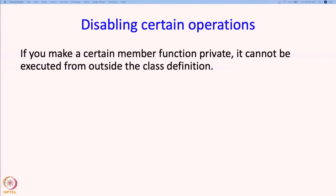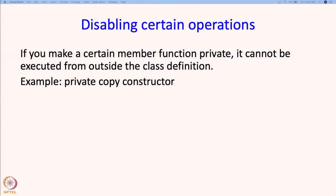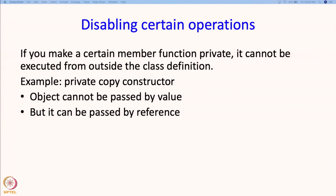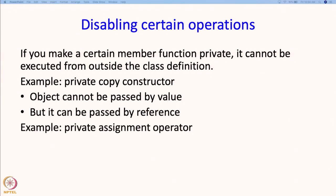This framework of member functions allows you to disable certain operations. If you make certain member functions private, they cannot be called from outside the class. For example, if you make the copy constructor private, it cannot be called from outside, meaning you are telling the designer: I do not want you to pass this object by value to any function. The object can still be passed by reference, but a copy cannot be made.